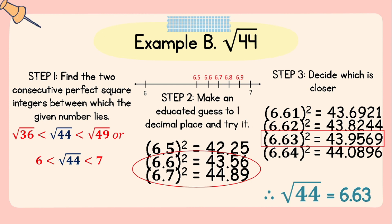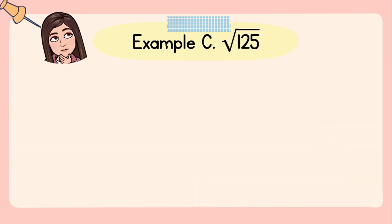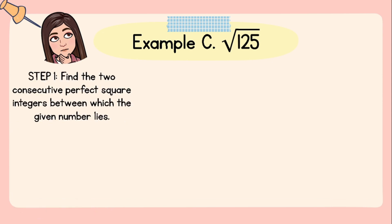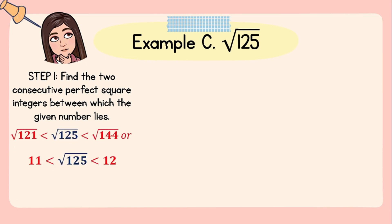Lastly, Example C: square root of 125. Step number one: find the two consecutive perfect square integers between which the given number lies. Since 125 is not a perfect square, its principal root is irrational. We need to find the two perfect square integers between which 125 lies — these are 121 and 144, so the square root of 125 lies between 11 and 12.